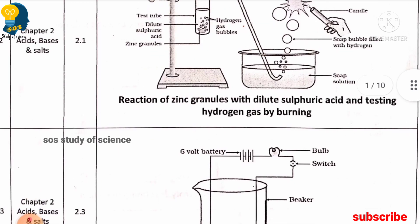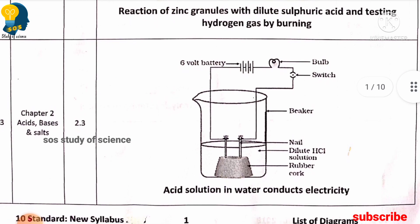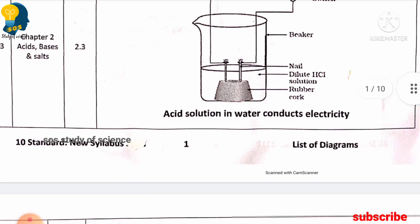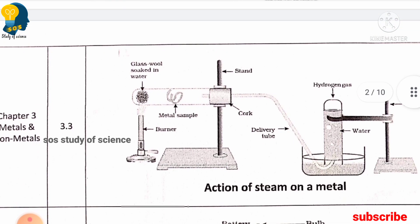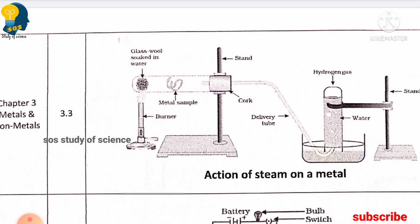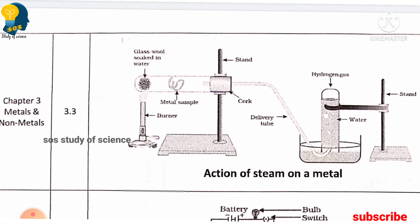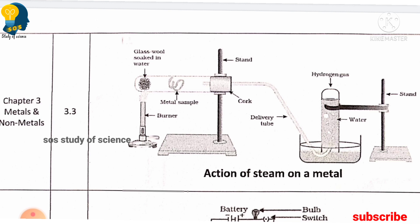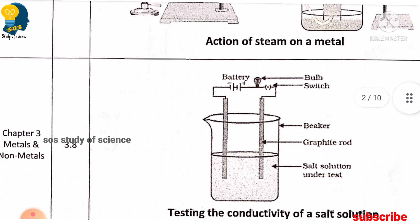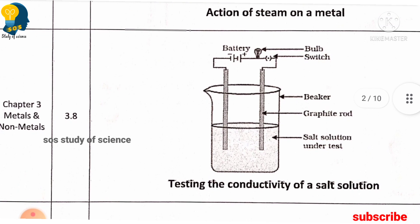The next diagram also belongs to the same lesson: acid solution and water conducts electricity. You must learn these two diagrams from acids, bases and salts. Moving to the next diagram — action of steam on a metal — this is from the metals and non-metals lesson. The other diagram from the same lesson is testing the conductivity of a salt solution. You must learn both these diagrams.